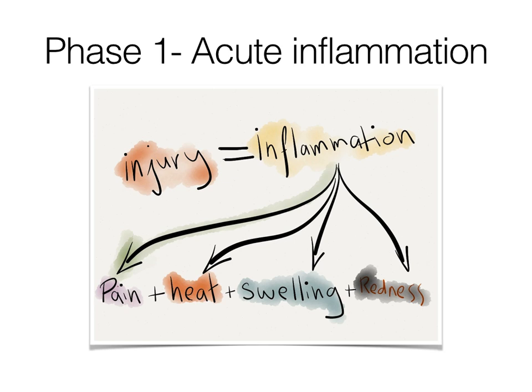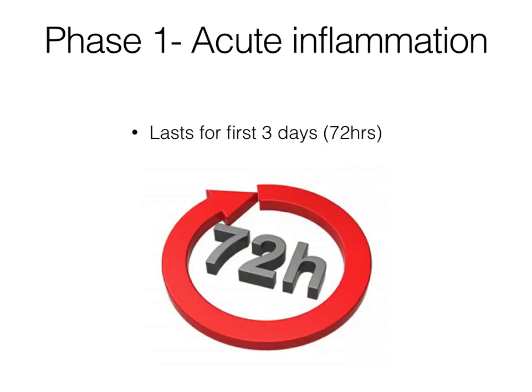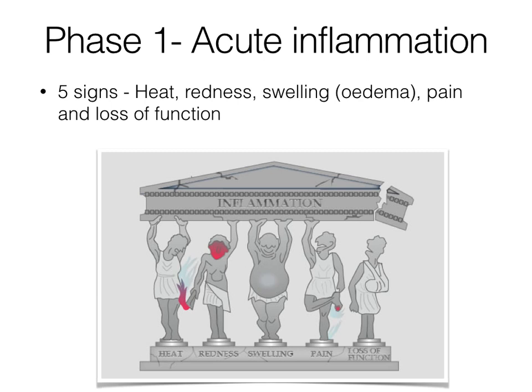Phase 1: acute inflammation. The acute inflammation stage lasts for 3 days or 72 hours. It is characterised by five signs: increased heat, redness, swelling or oedema, pain, and loss of function to the injured area.